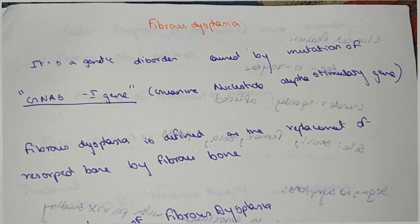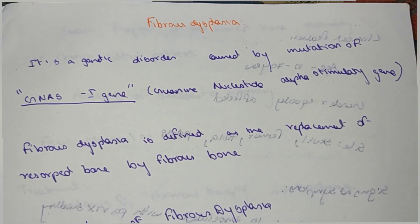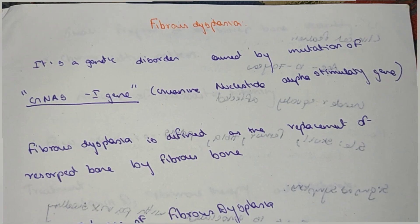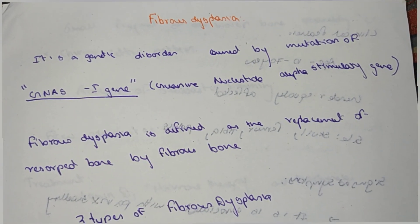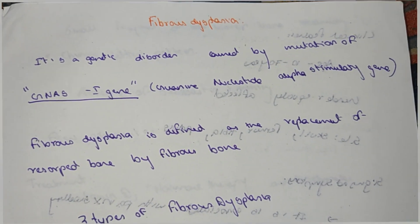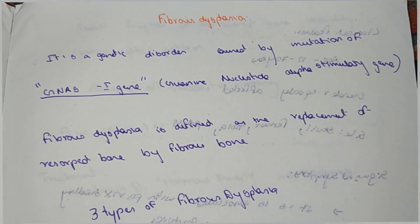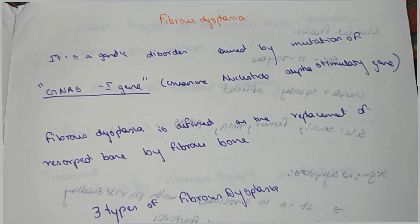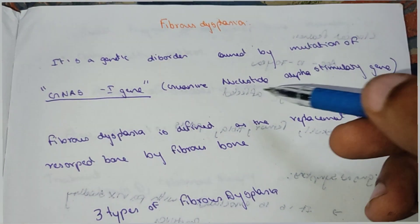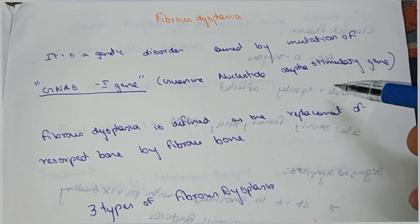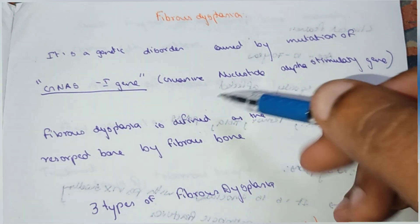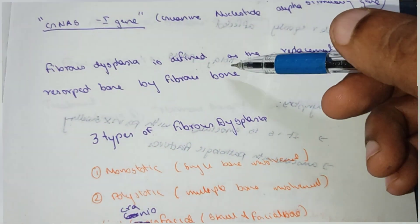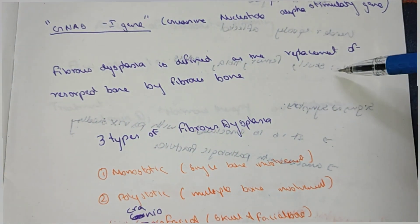Hi everyone, welcome to Medicine Out YouTube channel. In this video we are going to see about fibrous dysplasia in Tamil. Fibrous dysplasia is a genetic disorder caused by mutation of a gene.